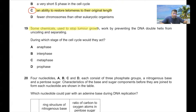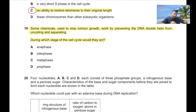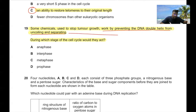Question 19: Some chemicals used to stop tumor growth work by preventing the DNA double helix from uncoiling and separating. These chemicals would act during interphase, because in that stage the DNA wants to uncoil for replication. So option B is the correct answer. 19B.